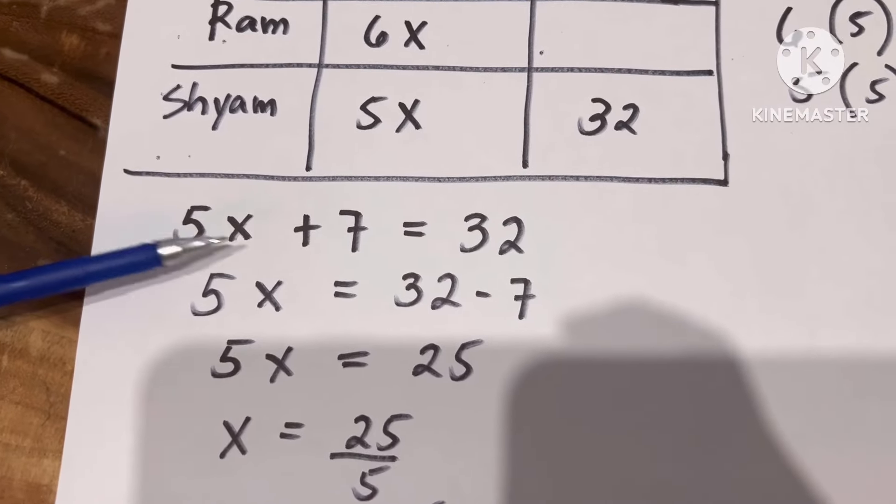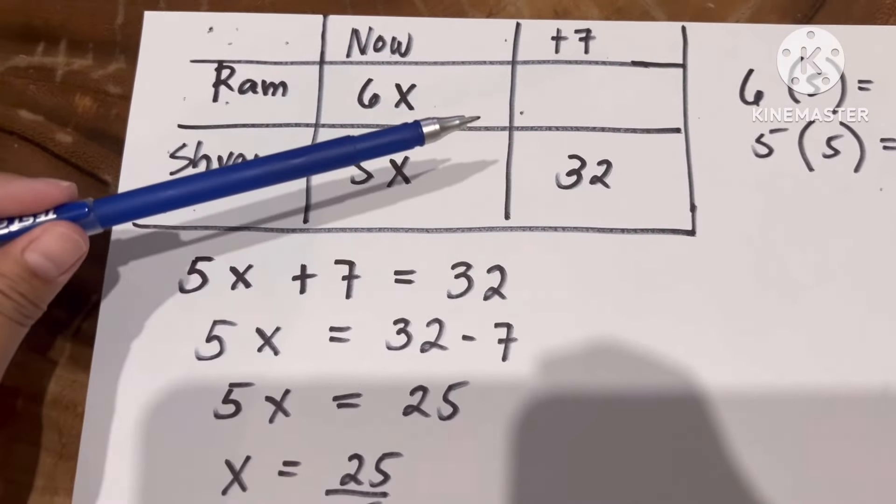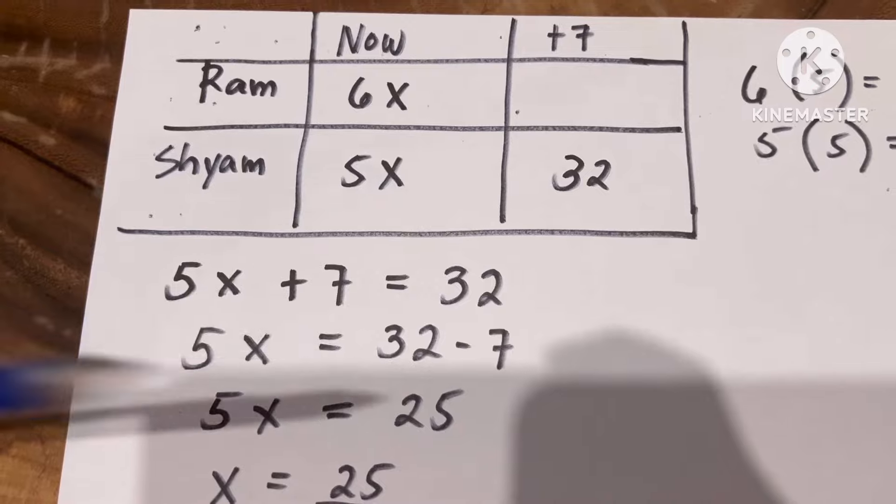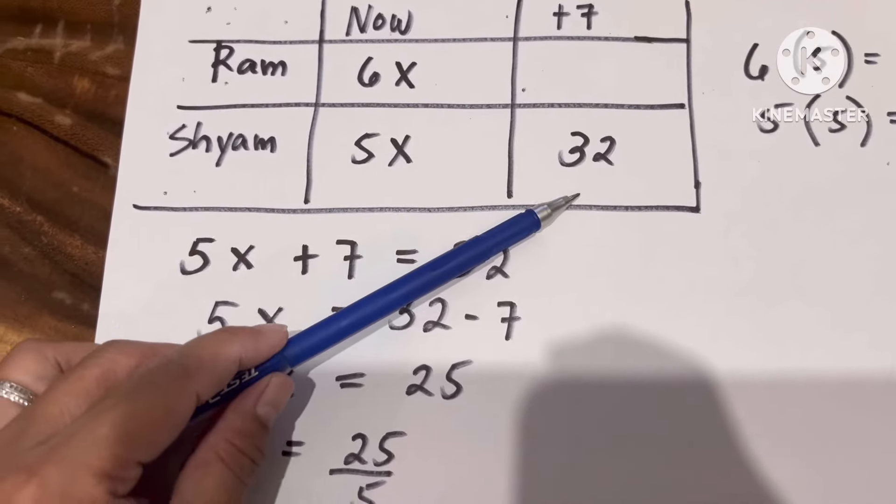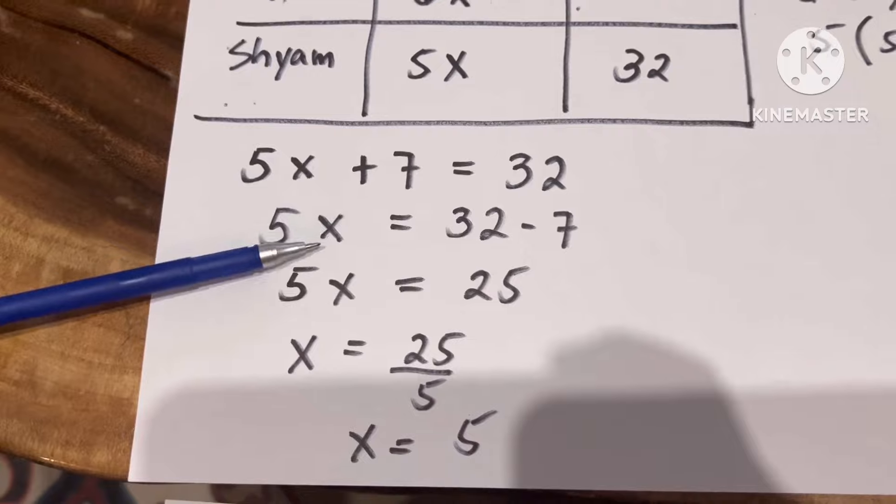5X, write it here, plus 7, because after 7 years, Shyam will become 32. That will be our equation.